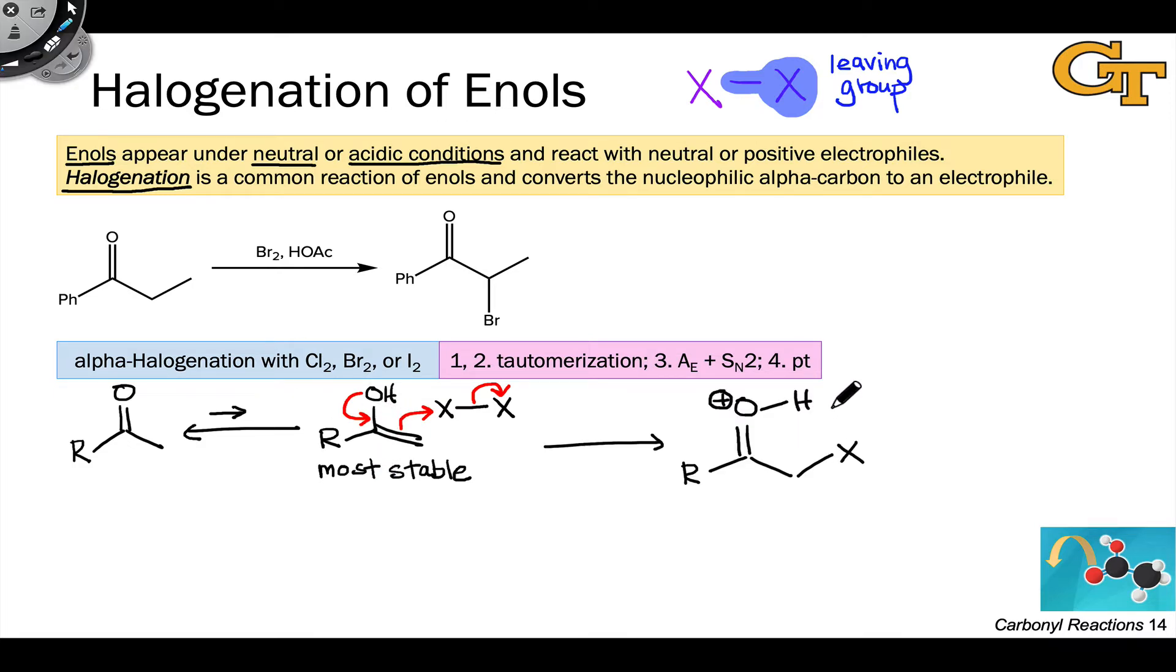We end up with an intermediate that resembles a protonated carbonyl compound. At this point, some base comes along and deprotonates this compound. This may occur, for example, under basic workup conditions, with the base being either water or hydroxide. This proton transfer generates the product, which is a neutral carbonyl compound in which a halogen has substituted for a hydrogen in the original compound.